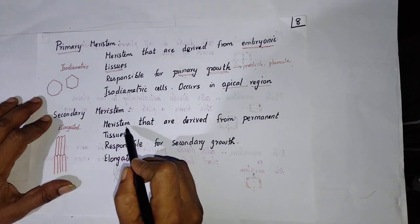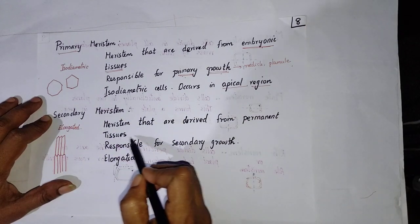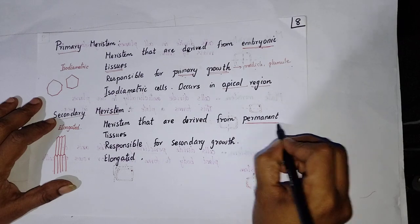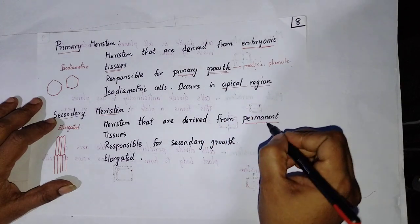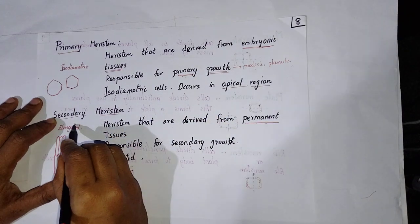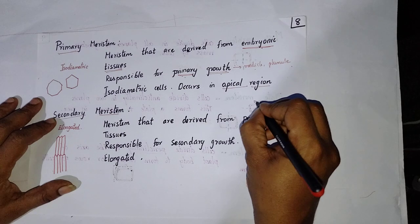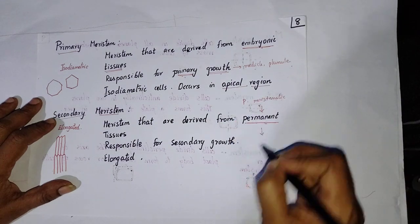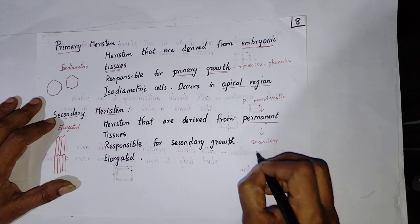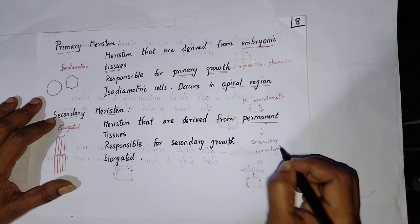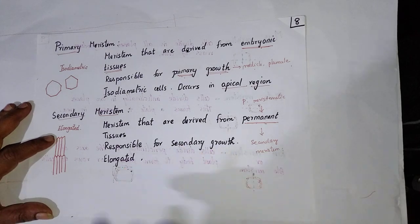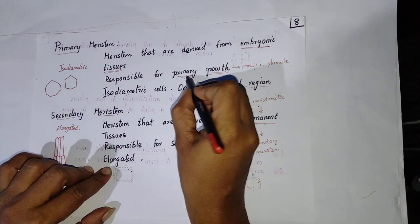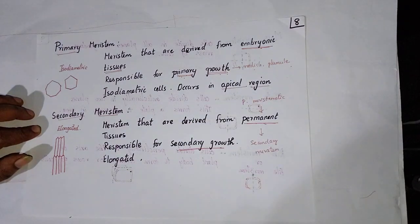Moving on to secondary meristems — these are meristems derived from permanent tissues. Permanent tissues are actually derived from primary meristematic tissues, and from these, secondary meristems are formed. Secondary meristems are elongated and are responsible for secondary growth. So primary meristems are responsible for primary growth, and secondary meristems are responsible for secondary growth — hence the names.